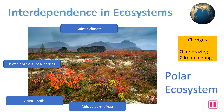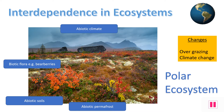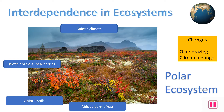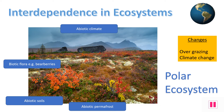Here we can see an image on screen of the landscape during the summer months of a fragile polar ecosystem. Everything depends on everything else — if one part of the ecosystem changes, the others are affected.